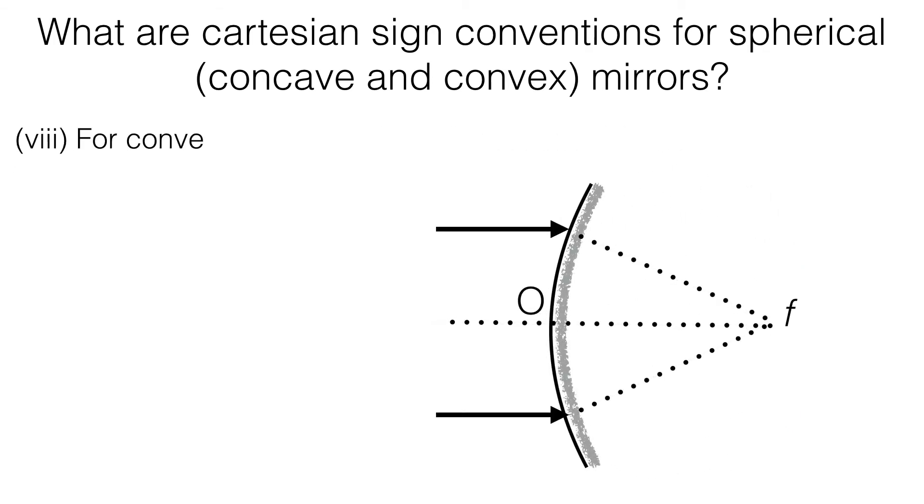For convex mirrors, radius of curvature R and focal length F are taken as positive.